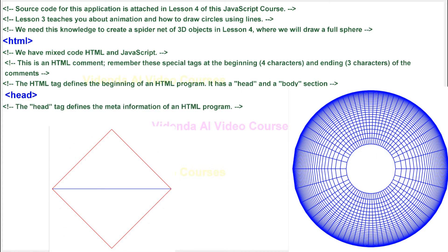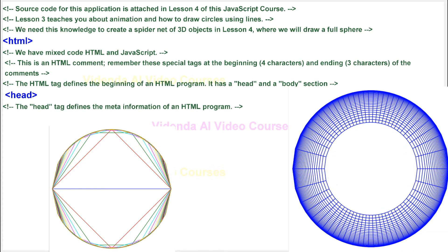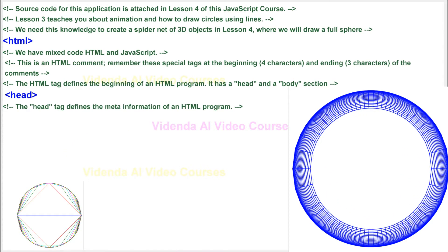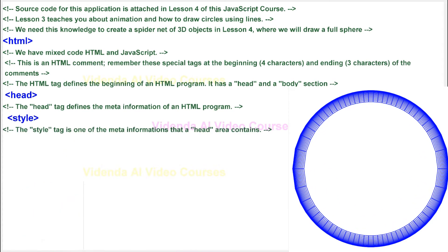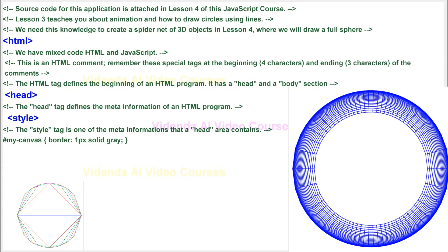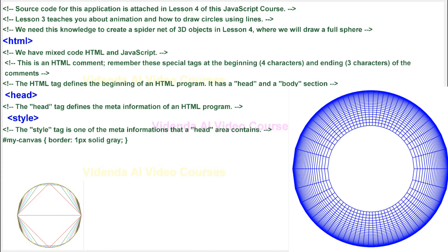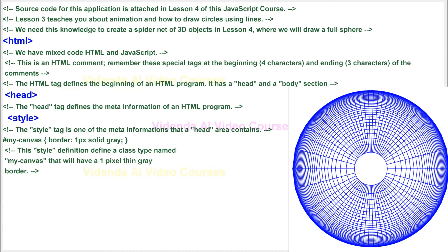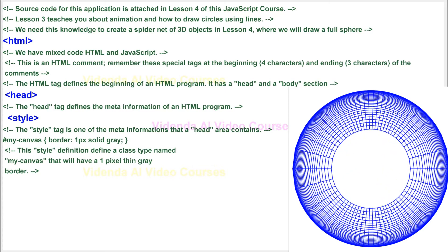The head tag defines the meta information of an HTML program. The style tag is one of the meta-informations that a head area contains. MyCanvas, border, 1px solid gray. This style definition defines a class type named MyCanvas that will have a 1 pixel thin gray border.